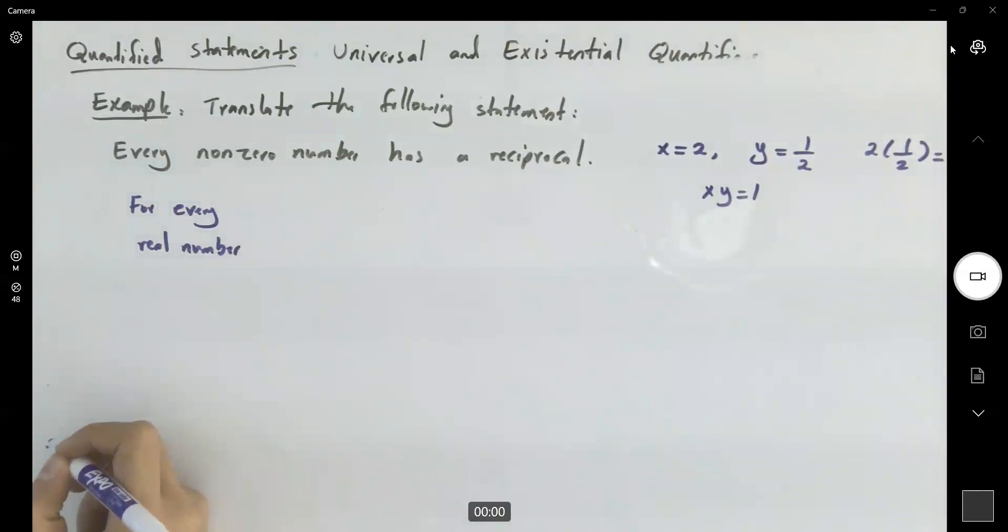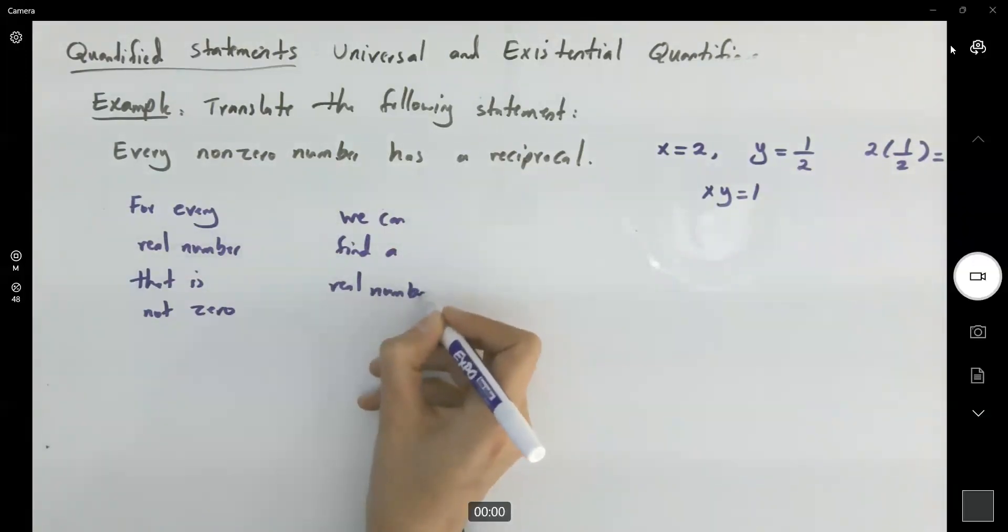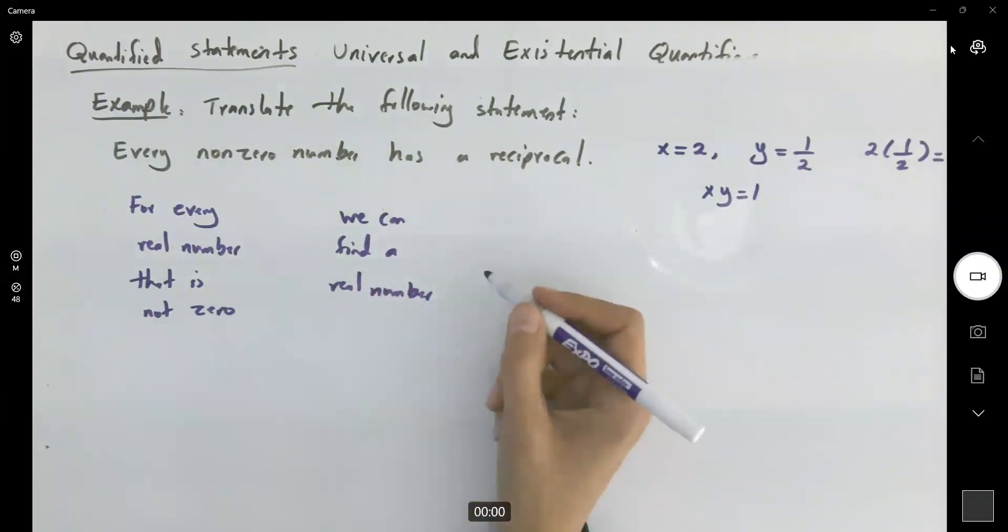For every real number that is non-zero, that is not zero, we can find a real number. There is a real number with what condition? Such that the multiplication is 1.